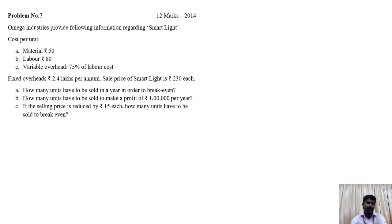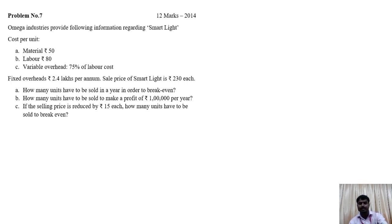Break even means the point at which the total sales of the company is equal to the total cost of producing the product. So the first question is with regard to calculation of the break-even point. The second question is with regard to calculating the desired sales units — not the desired sales value — in order for the company to earn a profit of rupees 1 lakh. Then if the selling price is reduced by rupees 15, how many units need to be sold to break even?